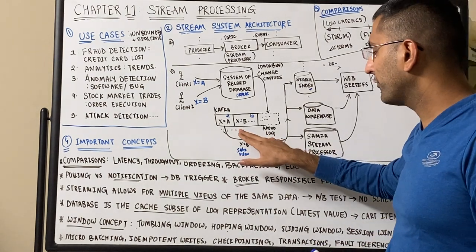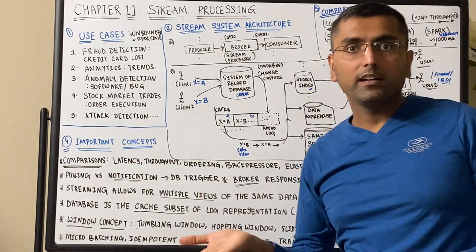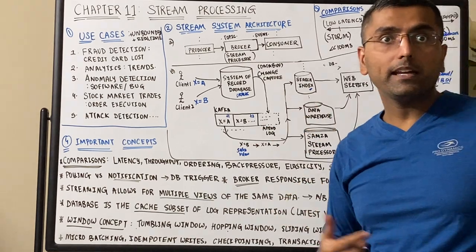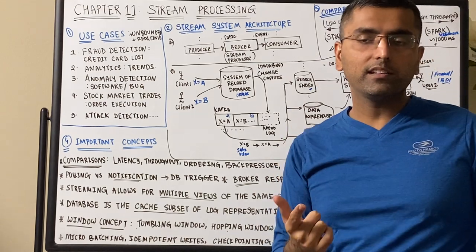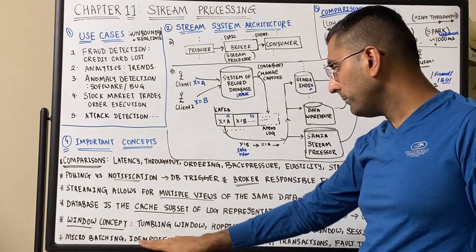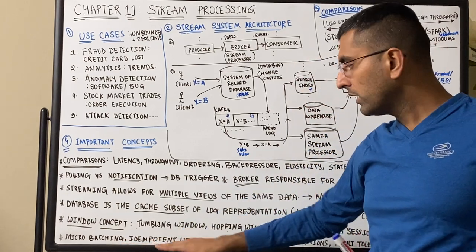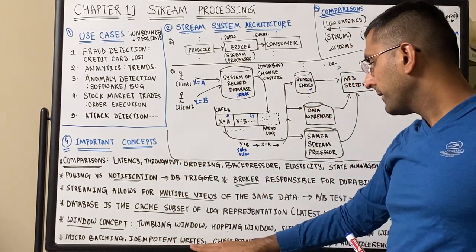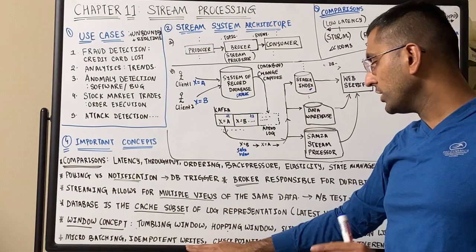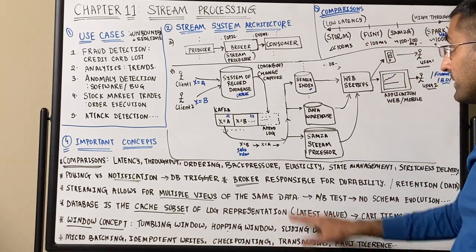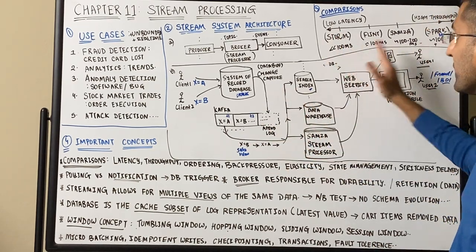These systems use different types of storage and checkpointing — how they replay data when a node goes down. They also differ in delivery guarantees: exactly-once delivery versus in-order delivery. Other tradeoffs include whether processing is true streaming, micro-batching, or larger batch processing; idempotent writes (where repeating the same operation produces the same output); checkpointing; transaction support; and fault tolerance. That's why multiple solutions exist in the market.